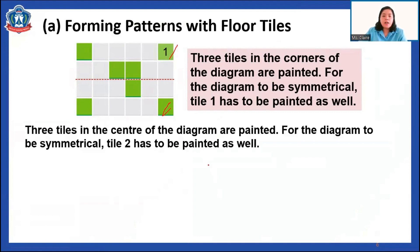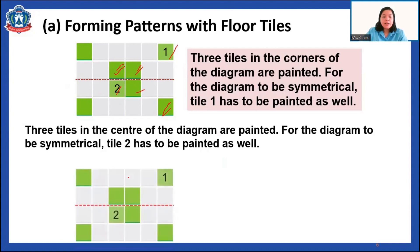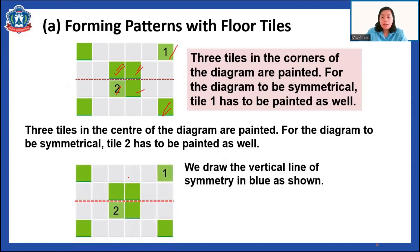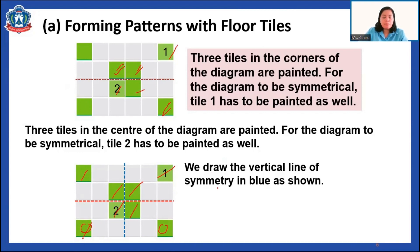Three tiles in the center of the diagram are painted. For the diagram to be symmetrical, two more tiles have to be painted as well — this one should also be painted to make it symmetrical. Now our square tiles are already symmetrical, and we can draw the vertical line of symmetry in blue. This one is symmetrical here, this one symmetrical here, and these corner tiles are symmetrical with each other.